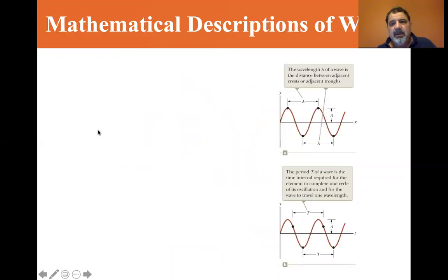And let's look, let's read the caption here. The wavelength lambda of a wave is the distance between adjacent crest or adjacent trough. So the top amplitude is called a crest and the bottom is called the troughs and where they cross the zero, I call that the zero crossing.